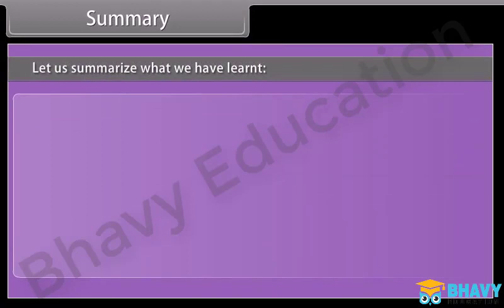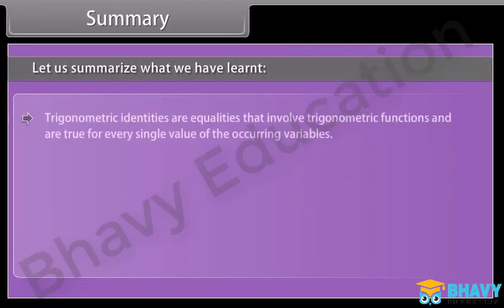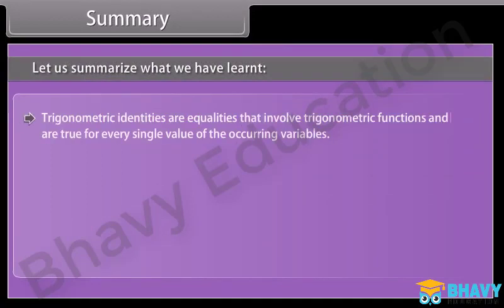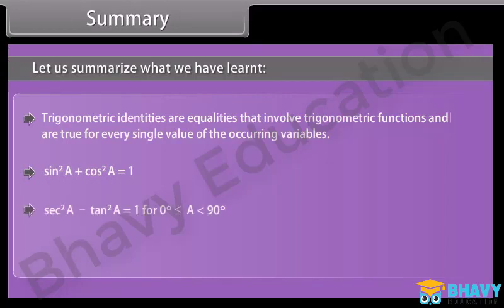Summary. Let us summarize what we have learned. Trigonometric identities are equalities that involve trigonometric functions and are true for every single value of the occurring variables. sin²a + cos²a = 1; sec²a − tan²a = 1, for 0° ≤ a < 90°. csc²a = 1 + cot²a, for 0° < a ≤ 90°.